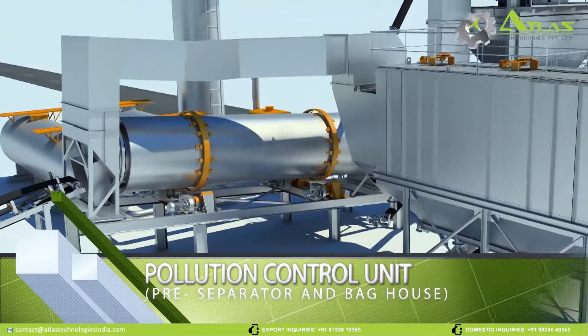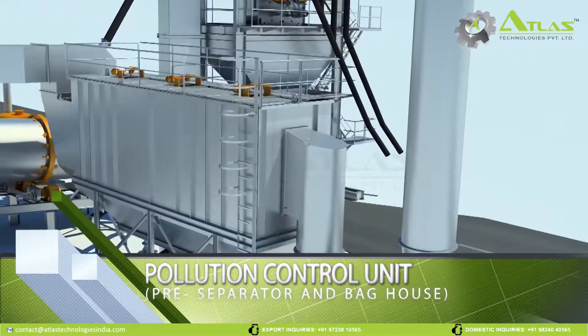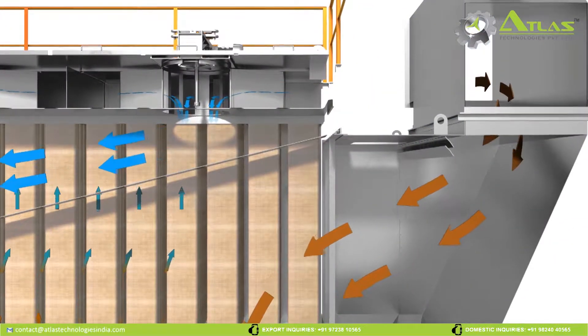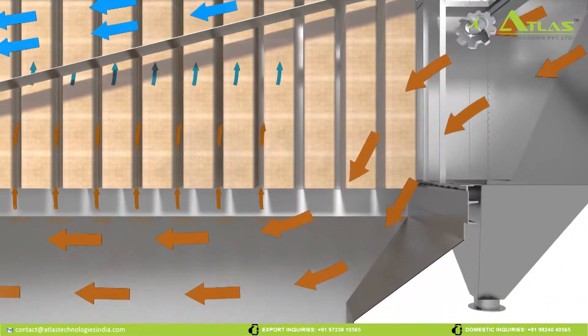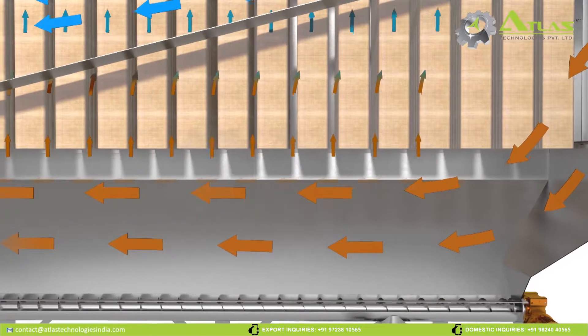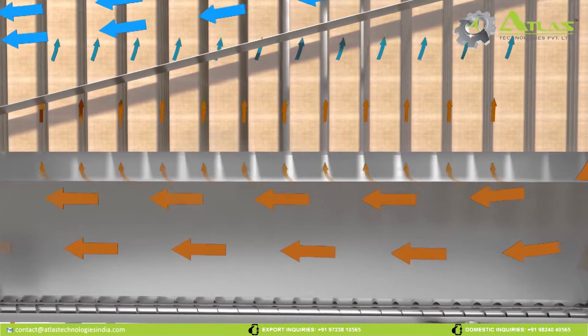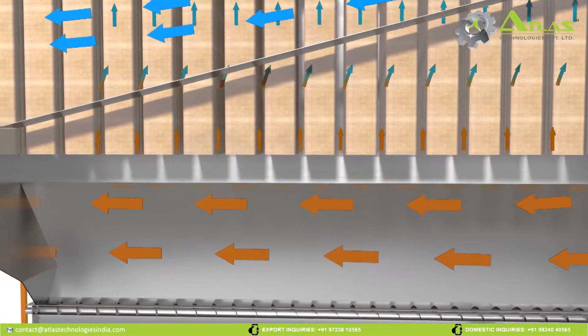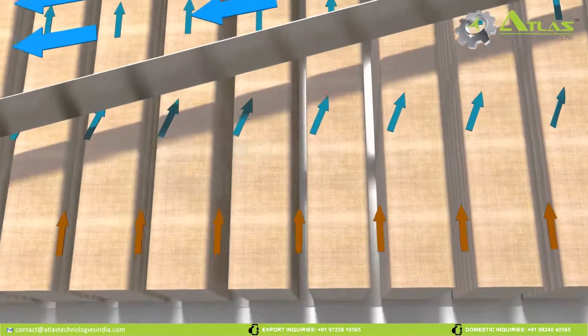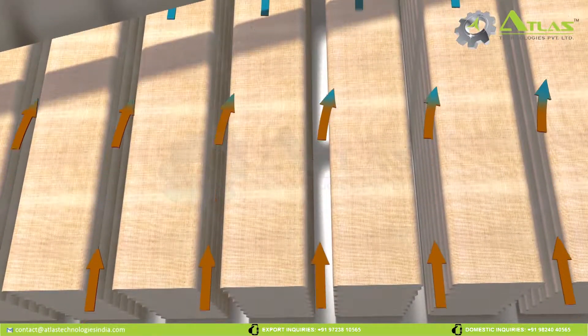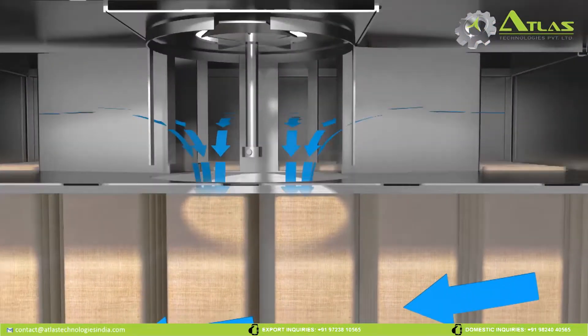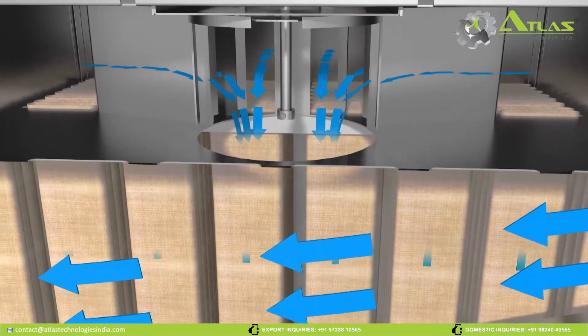Pollution Control Unit. The air along with dust particles enters into the pollution control unit. The heavy particles are separated from air in the pre-separator area. Then it's allowed to pass through series of bags with the help of induced draft system. Fine dust particles will get accumulated on the bag and clean air will pass through the bags and released into the atmosphere.